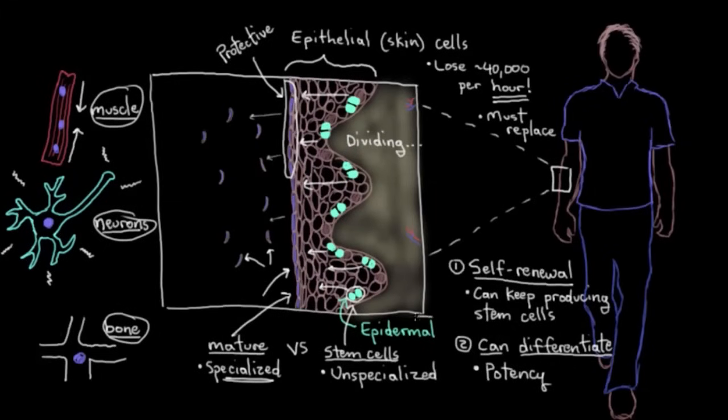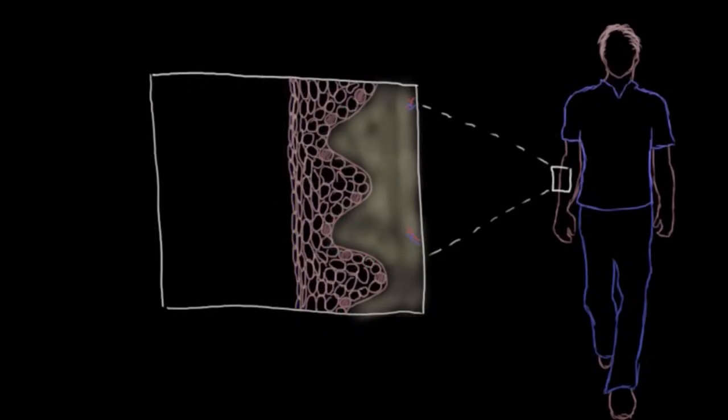So this epithelial stem cell we saw here is actually one of the less potent types of stem cell. In other words, these stem cells can only divide and specialize into more epithelial cells. So they are a source of epithelial cells, sure, but only epithelial cells and not any other cell type. So we call them unipotent, referring to their ability to only create one type of cell.